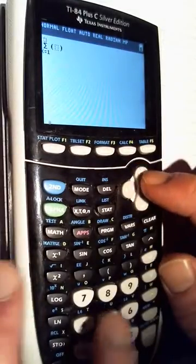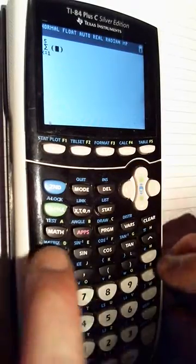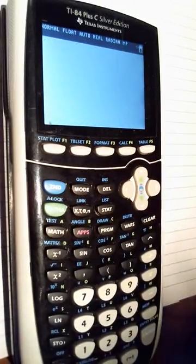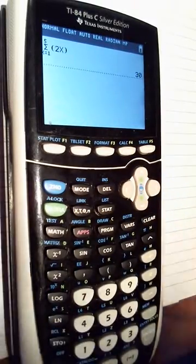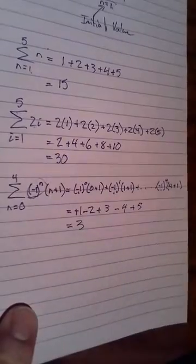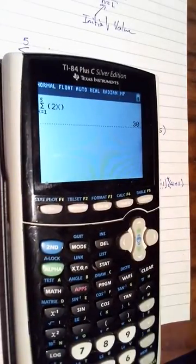So we'll go from 1 to 5 of the expression 2x, and so we'll hit equals and we'll get to 30. This went through the previous calculation from the previous example that we had done here. So that would be the equivalent way to type that in.